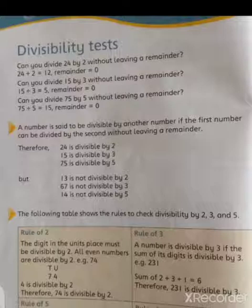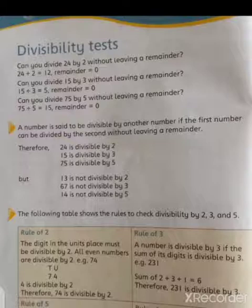What is divisibility test? A number is said to be divisible by another number if the first number can be divided by the second without leaving a remainder. If we divide a number by another number and the remainder is zero, then we say the first number is divisible by the second number. For example, if 24 is divided by 2, we get a remainder of zero.